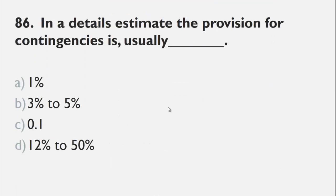MCQs number 86 is, in a detail estimate, the provision for contingency is usually a 1%, b 3% to 5%, c 0.1%, d 12% to 50%.